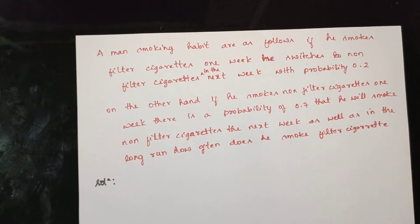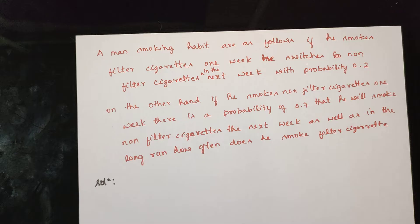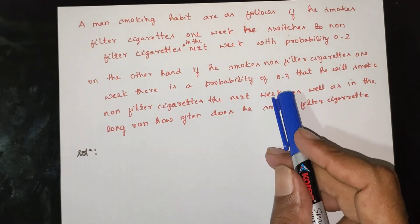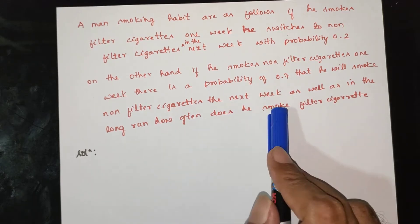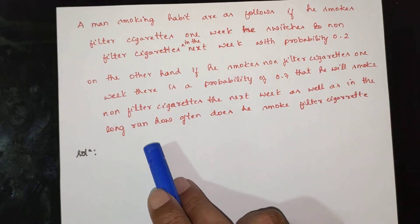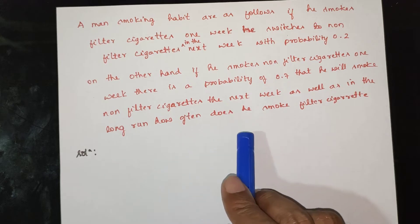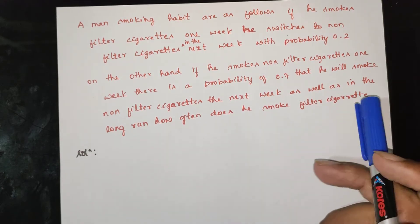A man's smoking habits are as follows. If he smokes filter cigarettes one week, he chooses non-filter cigarettes the next week with probability 0.2. On the other hand, if he smokes non-filter cigarettes one week, there is a probability of 0.7 that he will smoke non-filter cigarettes the next week as well. In the long run, how often does he smoke filter cigarettes?